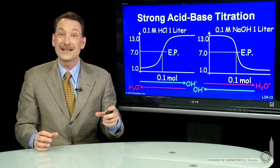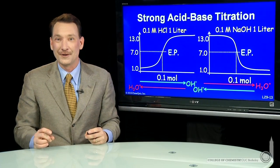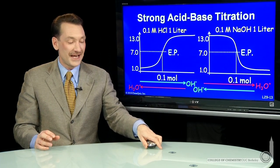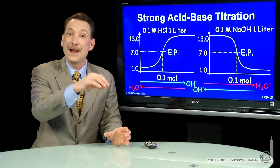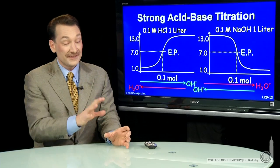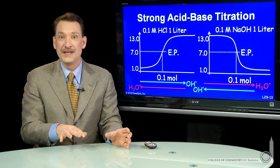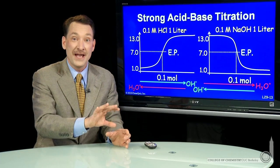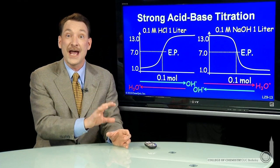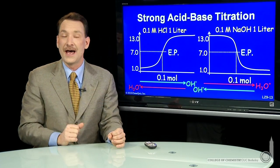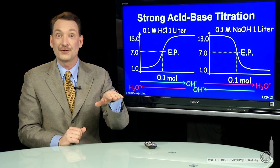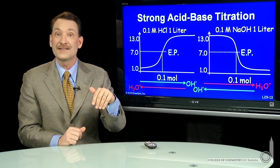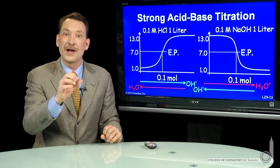Titration is the process of reacting acid and base together in a controlled way. You can take an acid solution and add base. The acid solution will originally have a low pH and a high acid concentration. As you add base, that base will react with the acid and lower the acid concentration. Lowering the acid concentration raises the pH — the solution becomes more basic, which makes sense because you're adding a base.